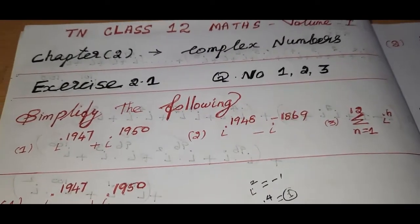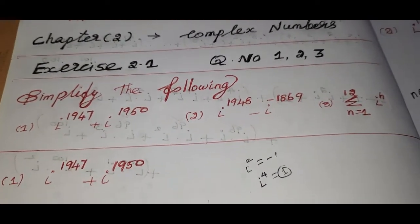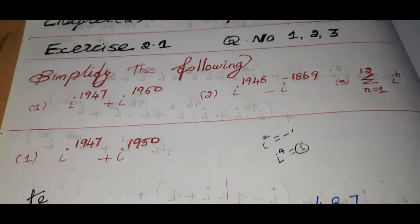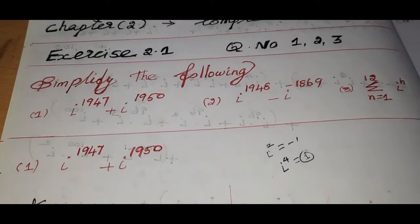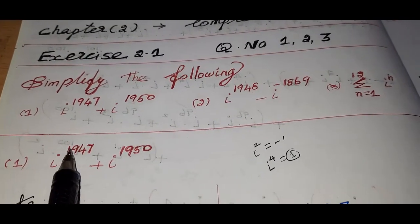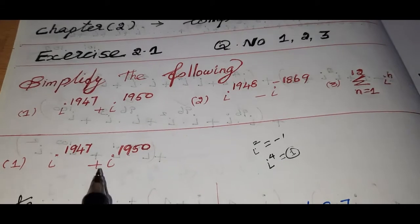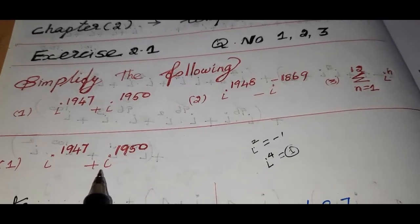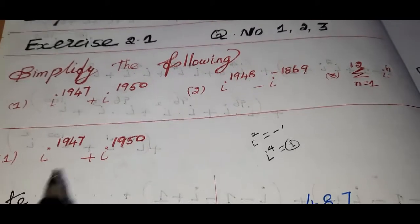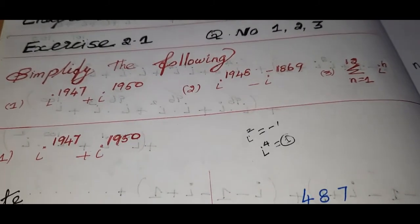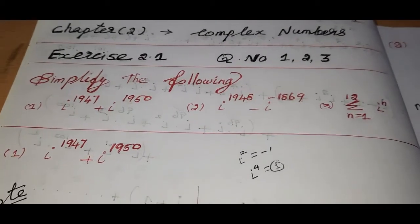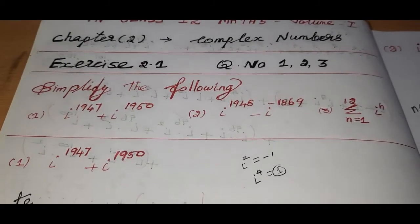We have three questions. Let's answer the first question. i power 1947 plus i power 1915. We know the key values: i squared equals minus 1, and i power 4 equals 1.